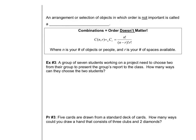On this page: an arrangement or selection of objects in which order is not important is called a combination. This is when order doesn't matter. The formula looks a lot like the permutation formula, except now you also divide by R factorial. So the only difference between permutations and combinations is that extra division by R factorial.